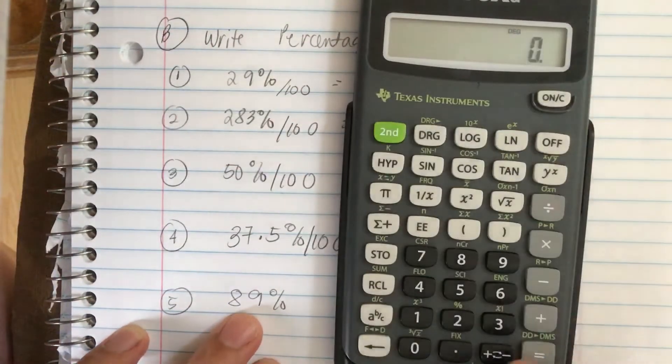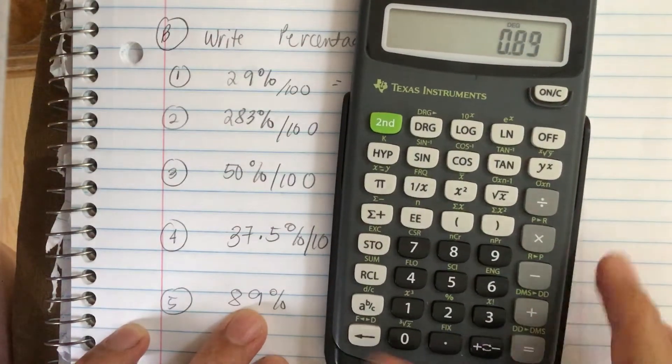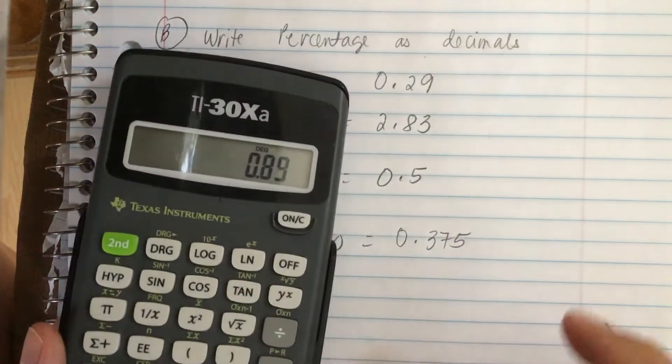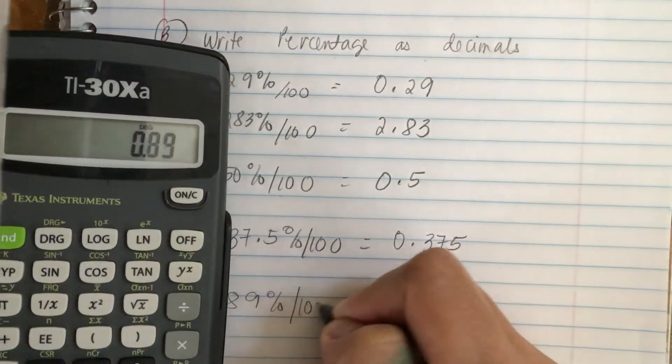So now last one, 89 divided by 100, and we get 0.89.